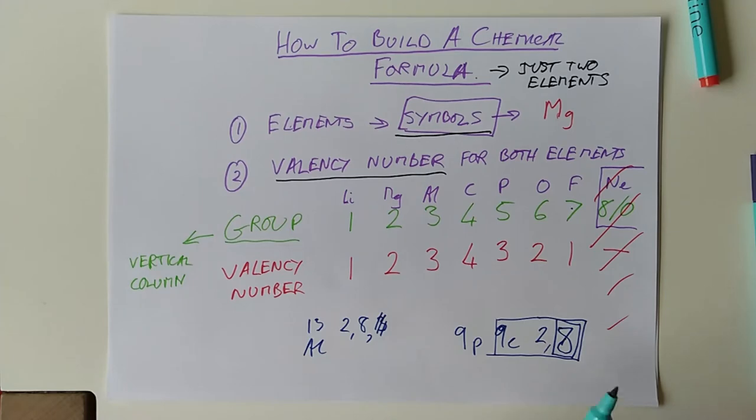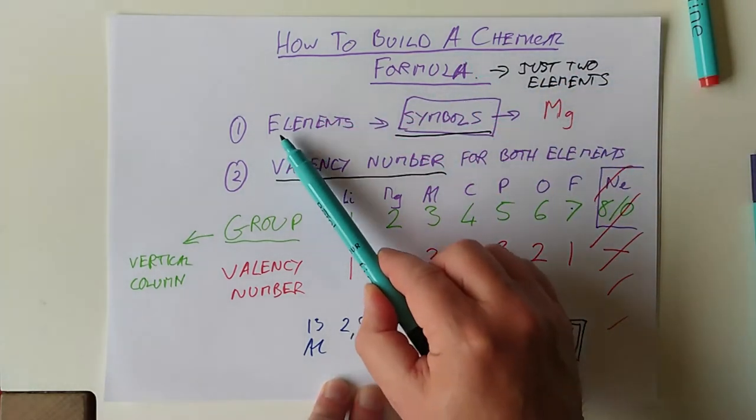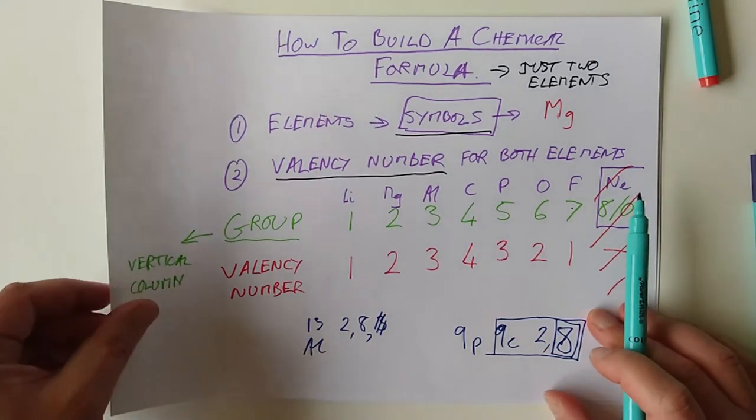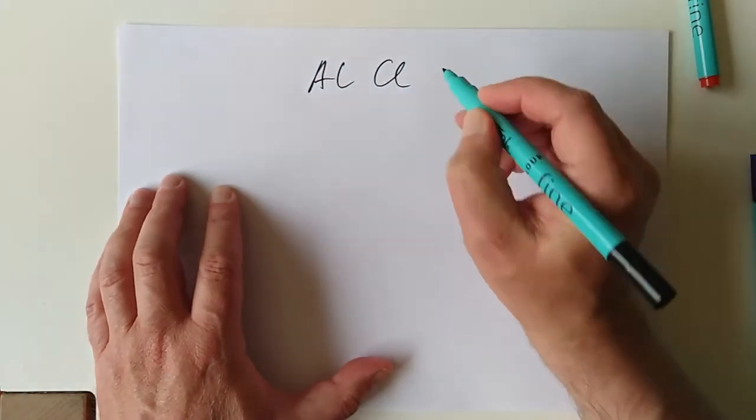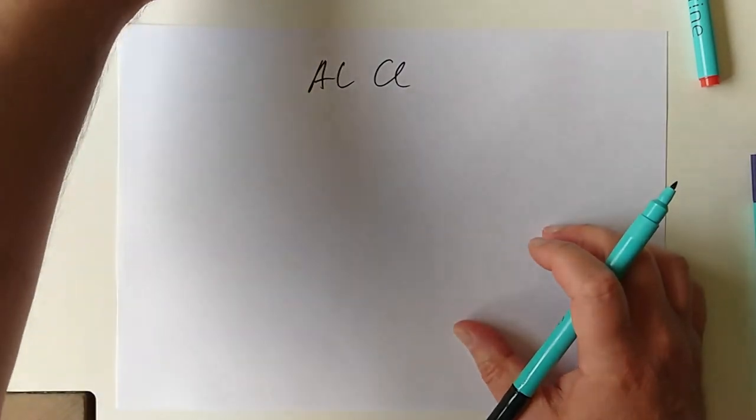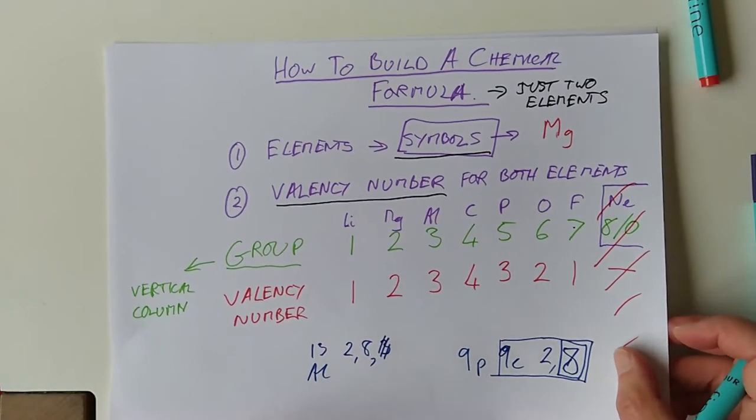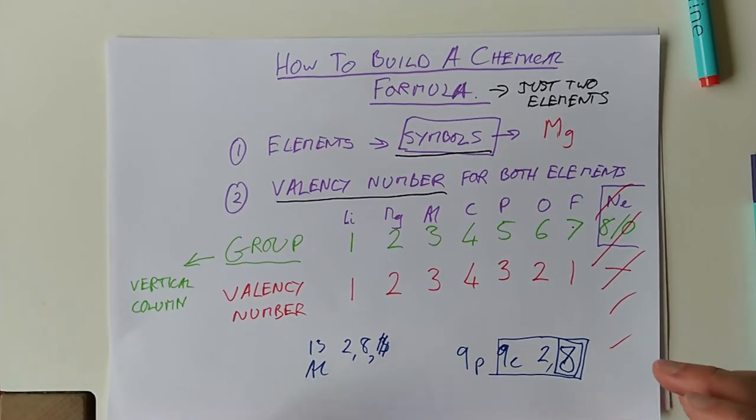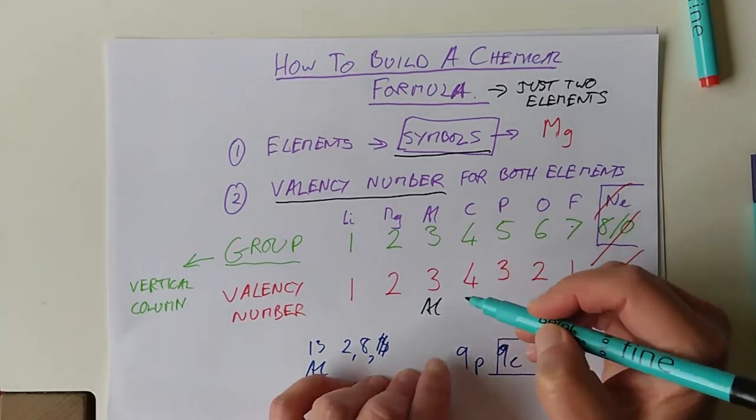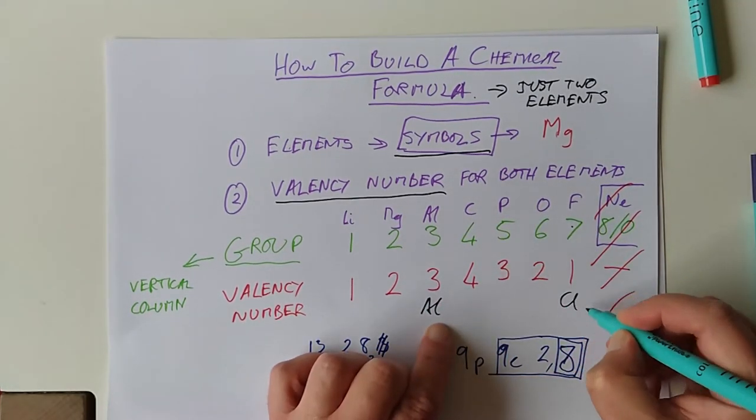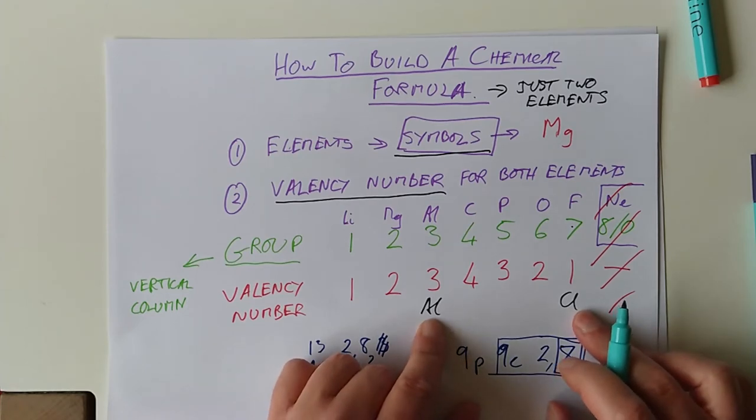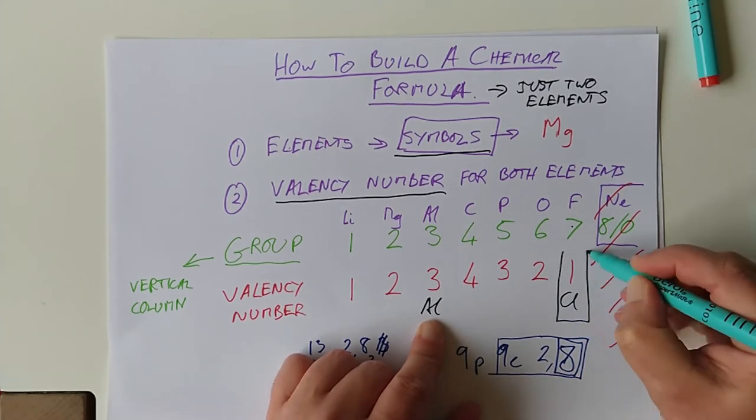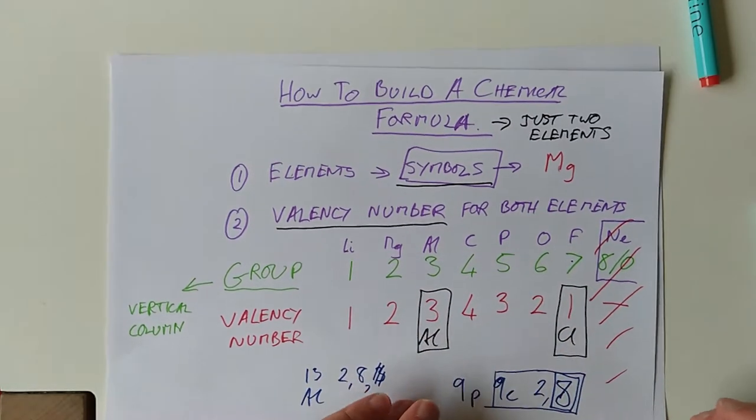These 9 electrons are actually set up as 2 in the first layer and 7 in the outer layer. That number there is the same as the group number. That's not a coincidence. That's the reason that fluorine is in group 7. The valency number here, by the way, is actually the number of electrons that you need to either add or remove to make that layer full up.